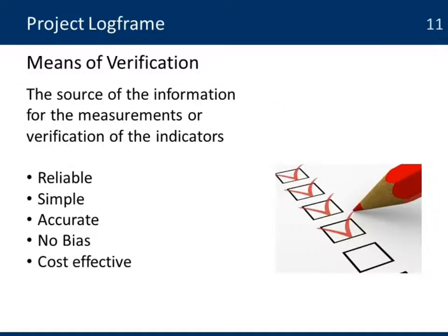In the next column, we have the means of verification — that is the source of information for the measurement and verification of the indicators. The recommendations for this list of information sources are that they need to be reliable, simple, accurate, have no bias, and be cost effective.